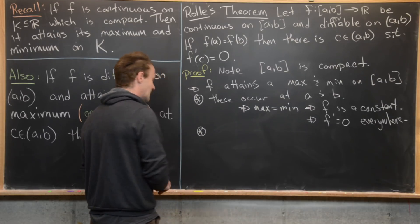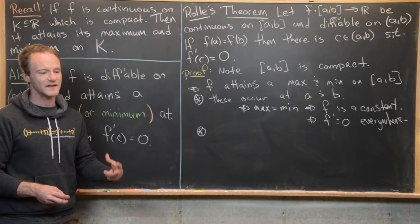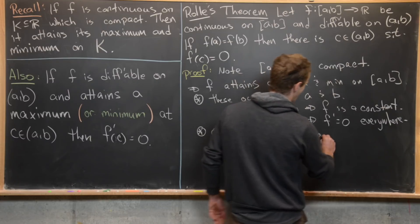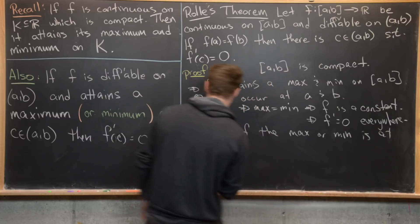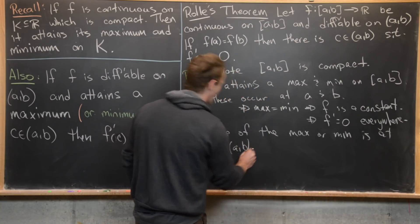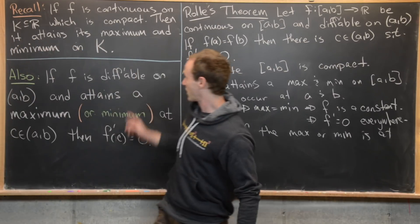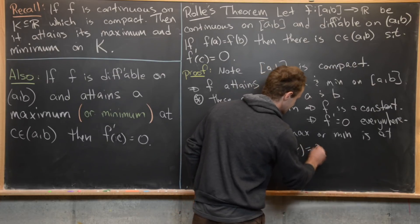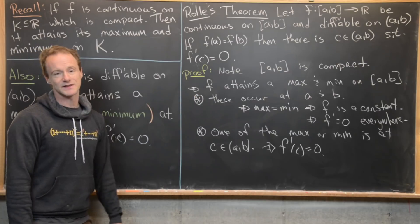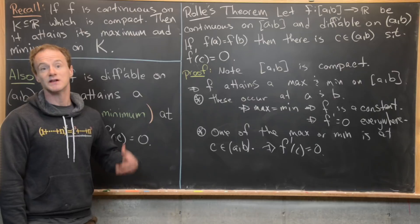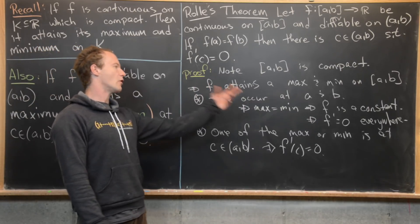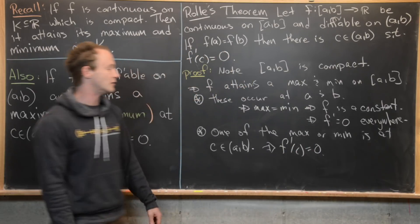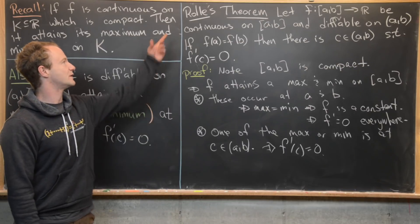That's the first, less interesting case. The next case is that one of these — the max or min — occurs on the interior, at some C which is an element of the open interval (a, b). But by the result we proved previously, we know that F prime of C is equal to zero. Notice that's really all we need to do. The compactness of [a, b] tells us F attains a maximum somewhere; either both extrema occur at the endpoints, or one occurs in the interior. Both possibilities bring us to the derivative being zero somewhere, so we've finished the proof of Rolle's theorem.